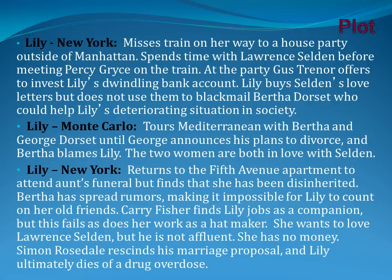Lily buys Selden's love letters—the letters that Bertha and Selden wrote—but she does not use them to blackmail Bertha Dorset, who could have helped Lily's deteriorating social situation. Carrie Fisher is the one who steps up and helps her. In Monte Carlo, after things don't work out in New York, Lily gets a chance to tour the Mediterranean with Bertha and George Dorset. She's only there because Bertha is having an affair with Ned Silverton and thinks her husband will be distracted by Lily's beauty. However, when George announces plans to divorce and Bertha blames Lily, Bertha dismisses her—she can no longer be on the yacht, is stranded, and has no money.